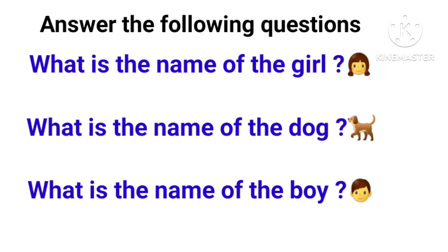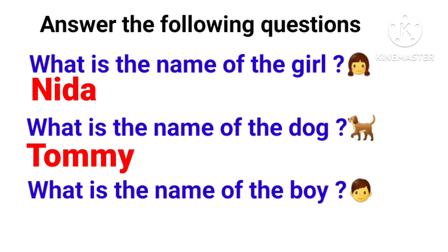First question: what is the name of the girl? Second, what is the name of the dog? Third, what is the name of the boy? You have to answer these questions. Let's say, for example, the name of the girl is Nida — I will write Nida. The name of the dog is Tommy, so we will write Tommy. The name of the boy is Sameer.